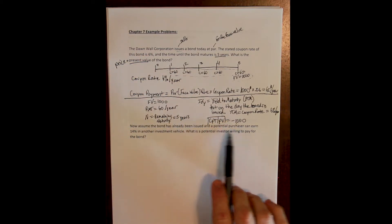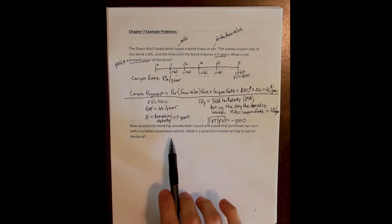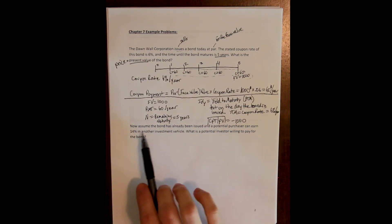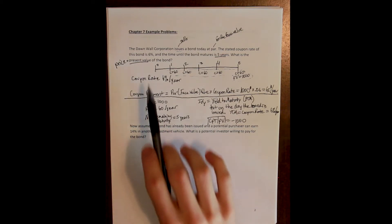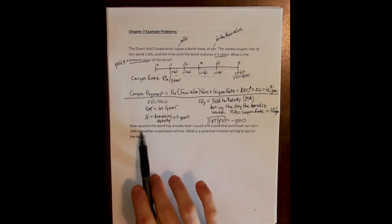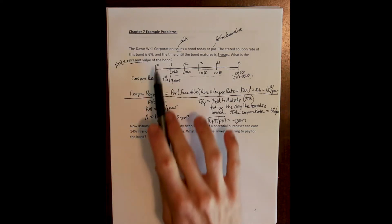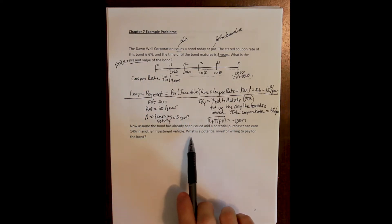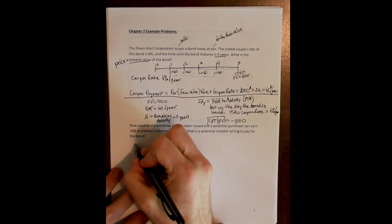That means a potential purchaser can earn fourteen percent today in another investment. They can buy some bond issued today that will pay them fourteen percent, even though just yesterday we bought a bond only getting six percent. So if I'm trying to sell my bond to get out of it — I made a terrible deal, I want the fourteen percent bond — what is someone willing to pay for my old bond? The answer is they have to be willing to pay less than what I paid yesterday, because why would they buy this when they could buy something better today?